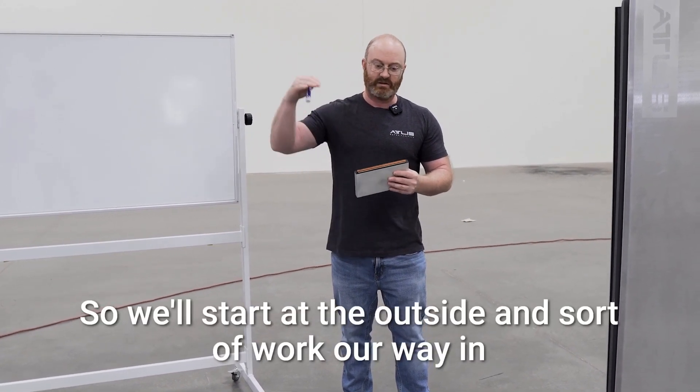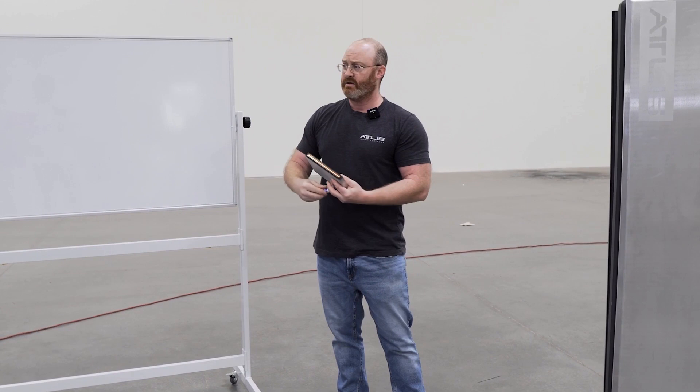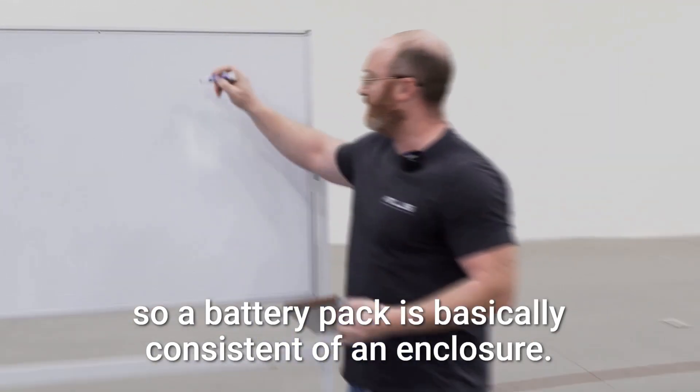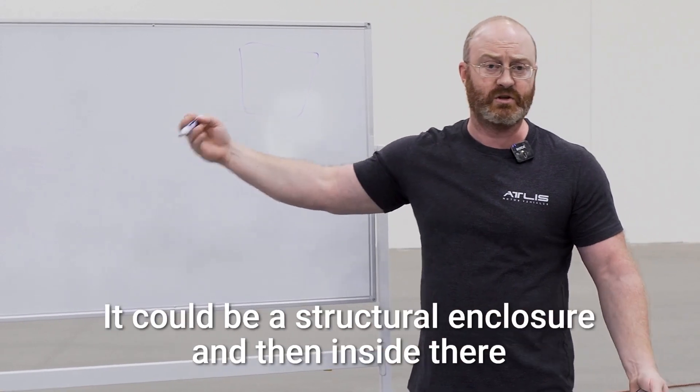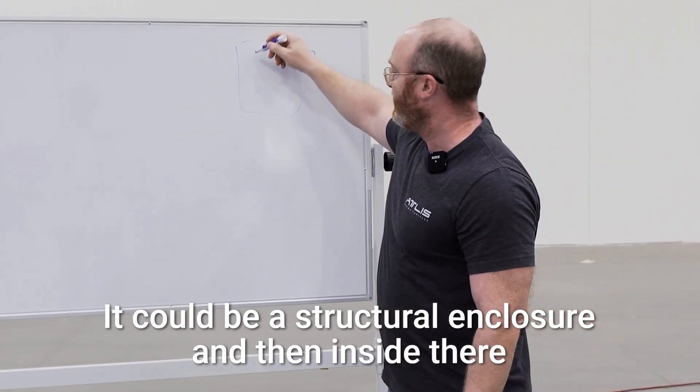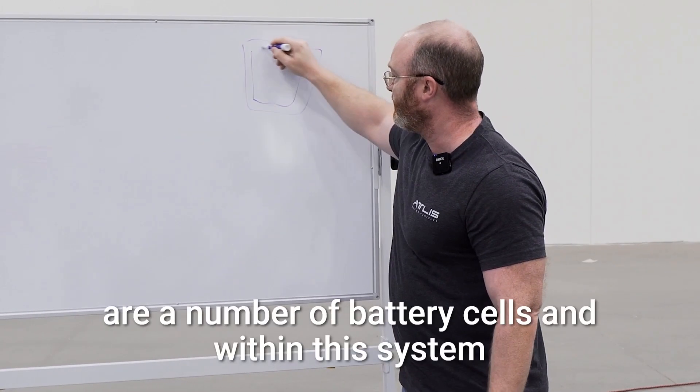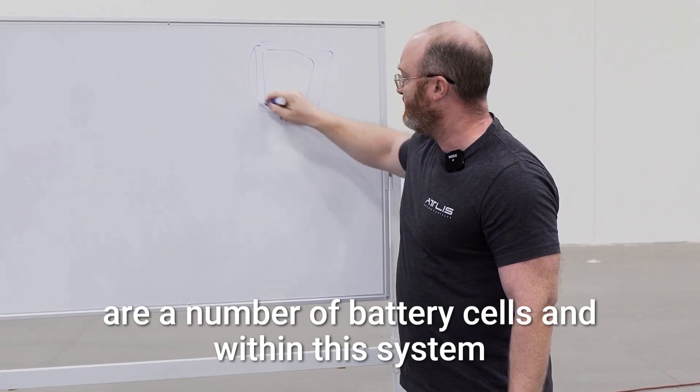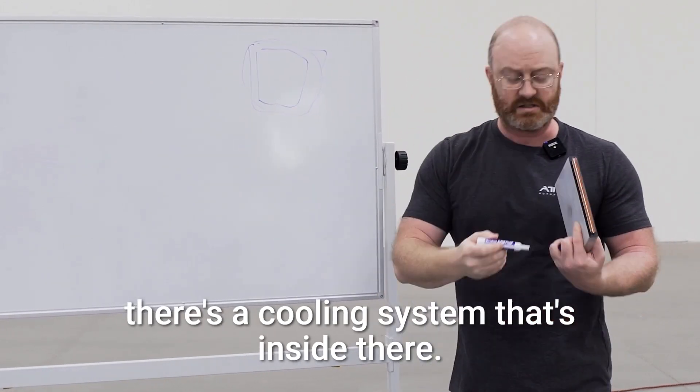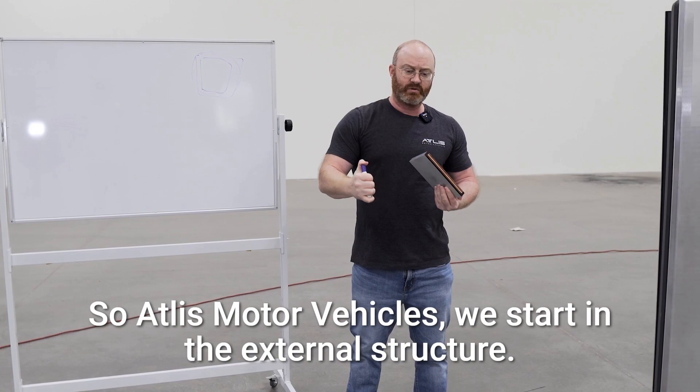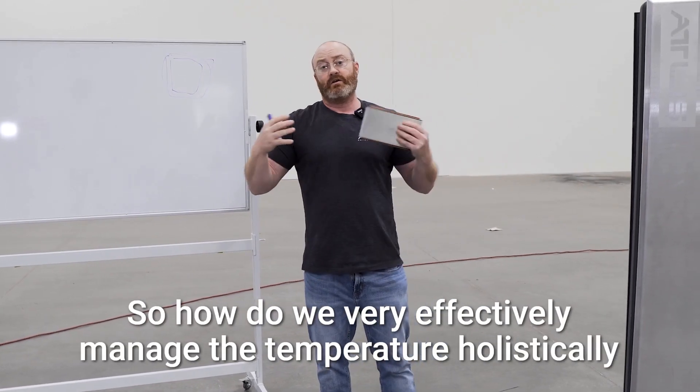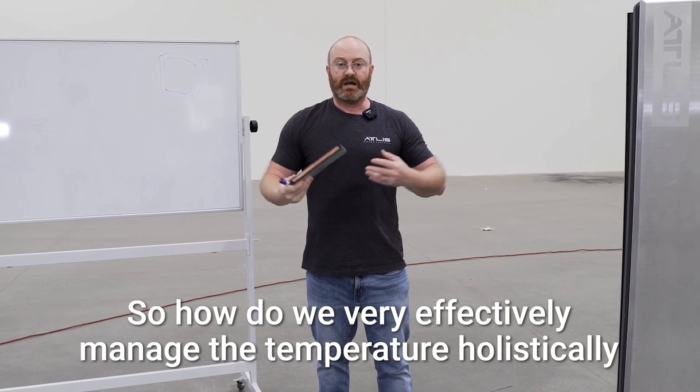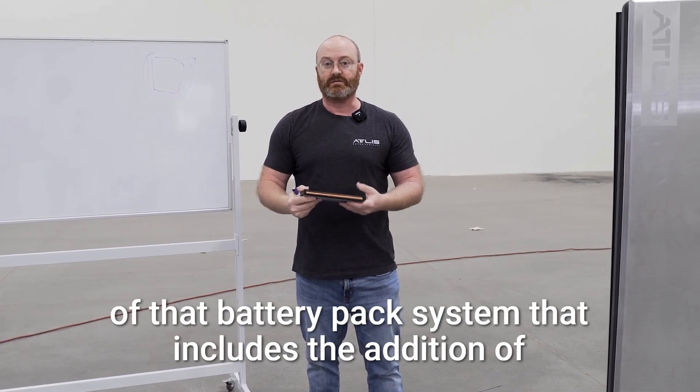So we'll start at the outside and sort of work our way in. A battery pack is basically an enclosure—it could be a structural enclosure—and then inside there are a number of battery cells, and within this system there's a cooling system inside there. At Atlas Motor Vehicles, we start in the external structure. So how do we very effectively manage the temperature holistically of that battery pack system?